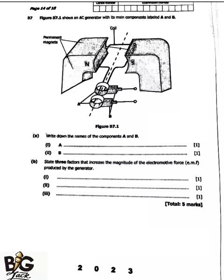Hello guys, welcome to this Science Paper One 2023 GCE revision. In this video we are going to answer question B7 and one question from the cathode ray oscilloscope topic. Remember to subscribe to my YouTube channel if you are new, and if you find it useful, share it with your friends.